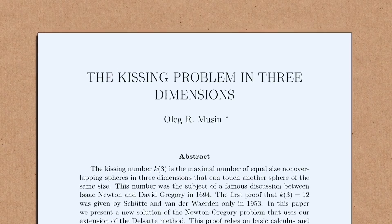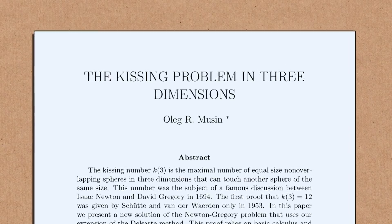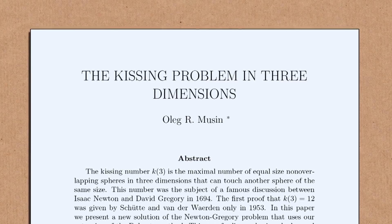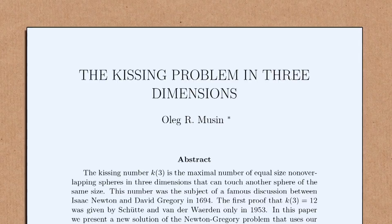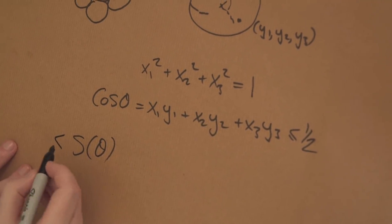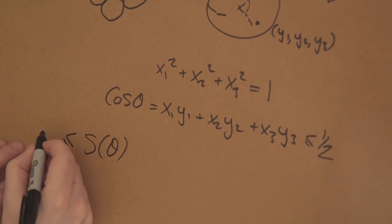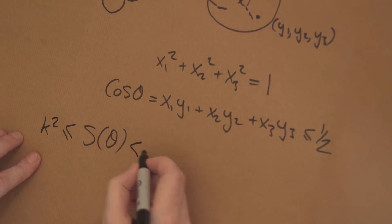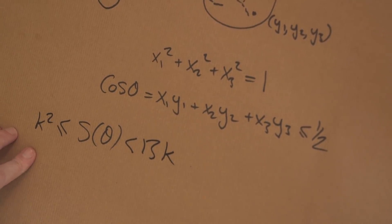There is a more modern proof of this by a mathematician called Oleg Mucin. He showed that you can have a function — something based on all the angles between the kissing points, let's call it s — and he showed that this thing is always greater than or equal to the kissing number squared and less than 13 times the kissing number. Which is enough to prove the kissing number has to be less than 13. But we already know an example where the kissing number is 12, so the kissing number is 12 — that must be the maximum number you can fit around a central sphere.